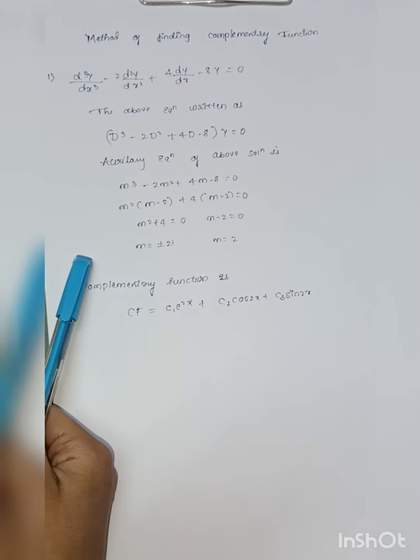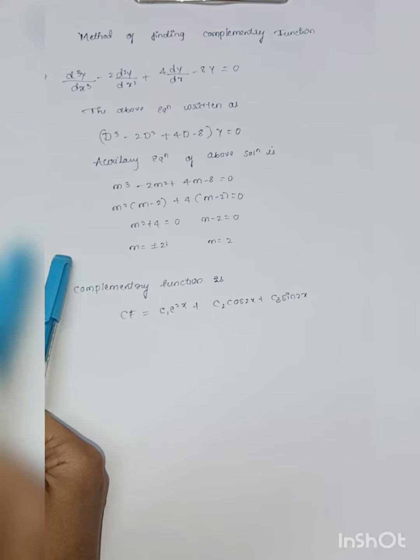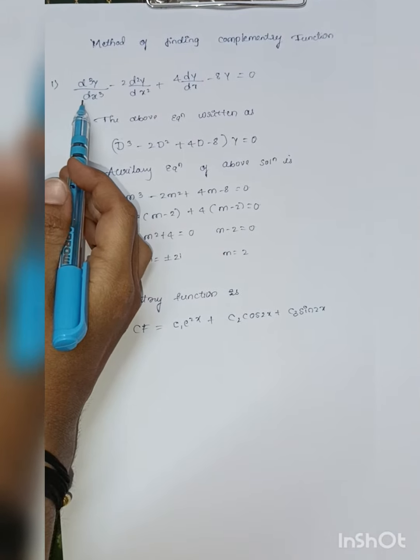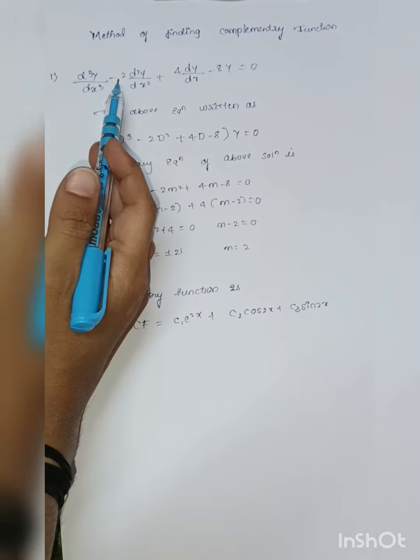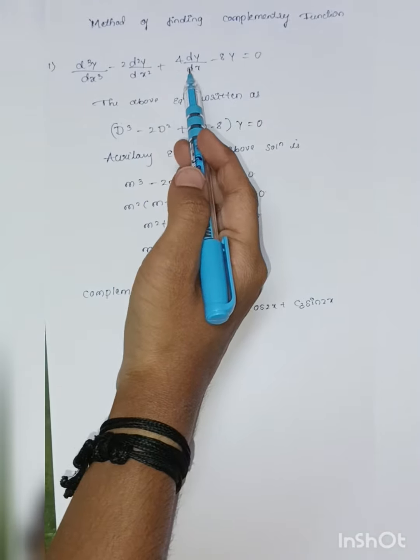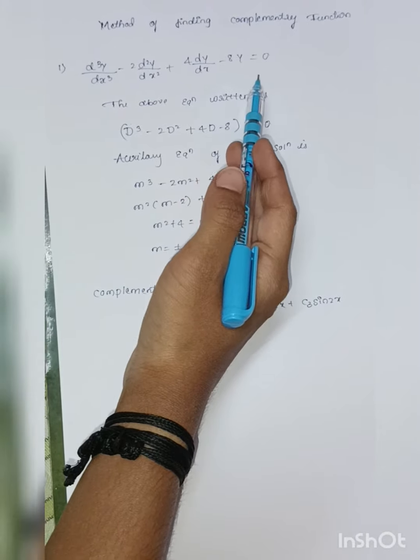Hello everyone, today we are discussing method of finding complementary function. Here the problem is d cubed y by dx cubed minus 2 d squared y divided by dx squared plus 4 dy by dx minus 8y is equal to 0.